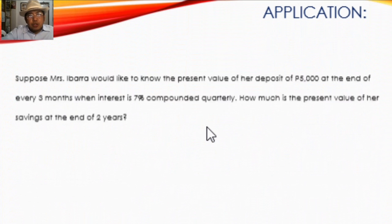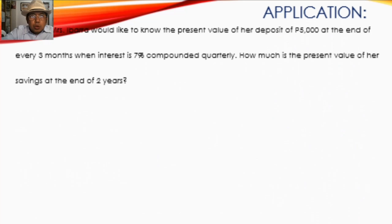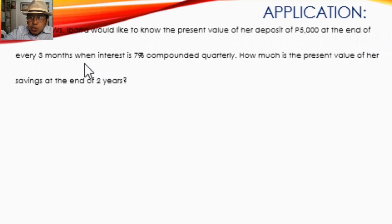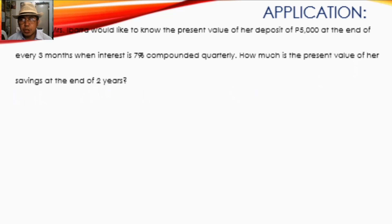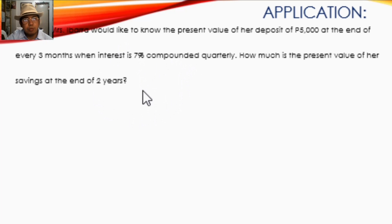Now let's look at an application. Suppose Mrs. Ibarra would like to know the present value of her deposit of five thousand pesos at the end of every three months, when the interest is seven percent compounded quarterly. The question is: how much is the present value of her savings at the end of two years? Before computing, let's analyze the problem.